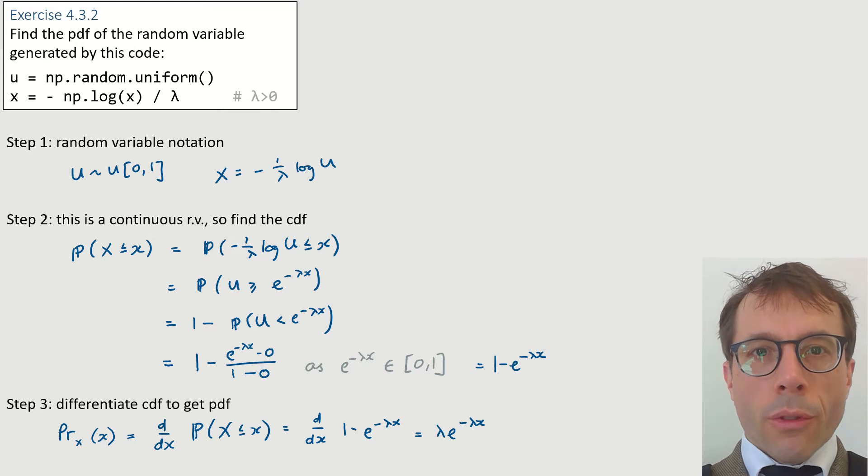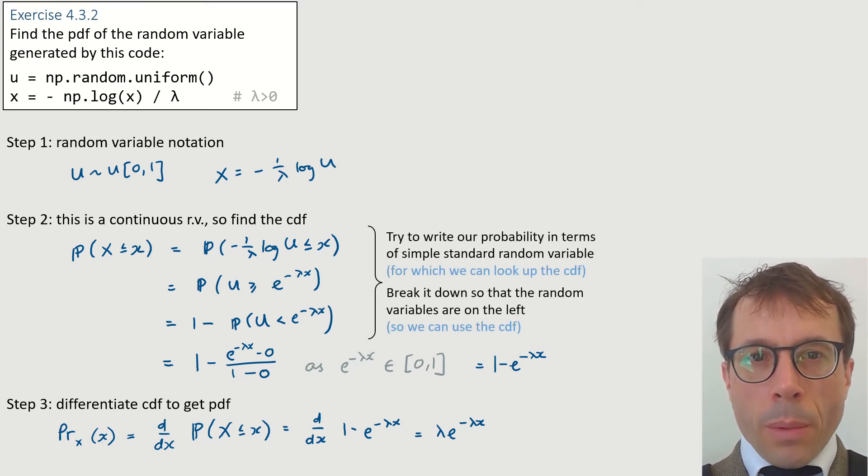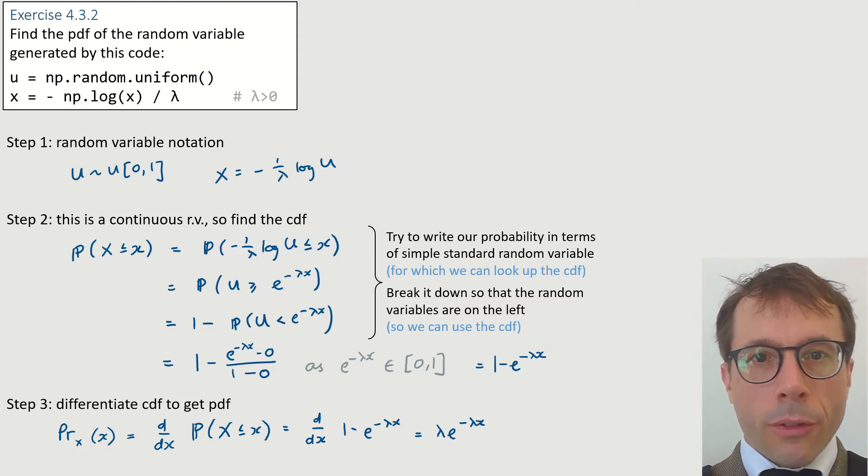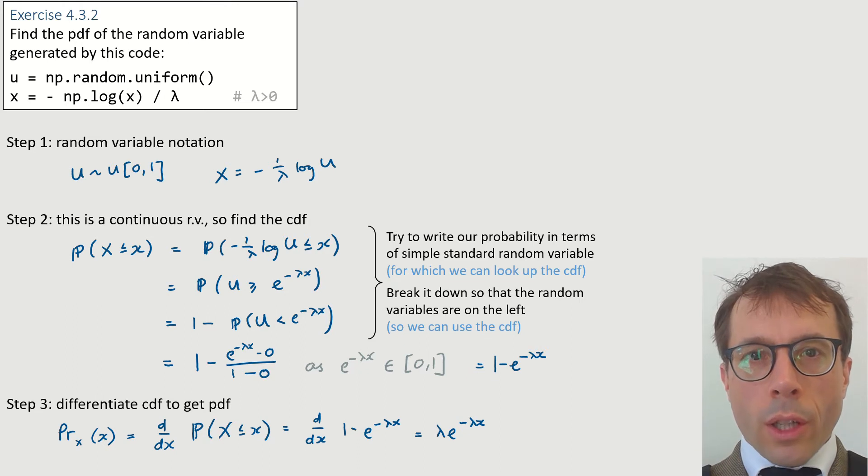Let's just review the strategy. We had three standard steps, and it was the middle step, finding the CDF, that took all the work. This generally takes some hard work, there's no general recipe, but there are some useful tactics. Most probability models are built up out of simple standard random variables, and so we'll generally try to leverage the CDFs of the simple standard random variables. Here we wrote our probability in terms of u, a uniform, and we arranged it to put u on the left inside the probability expression, so that we could just look up the uniform CDF and apply it.